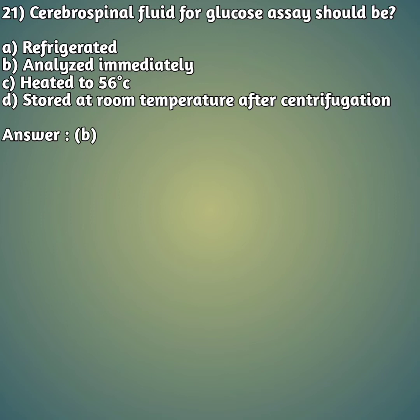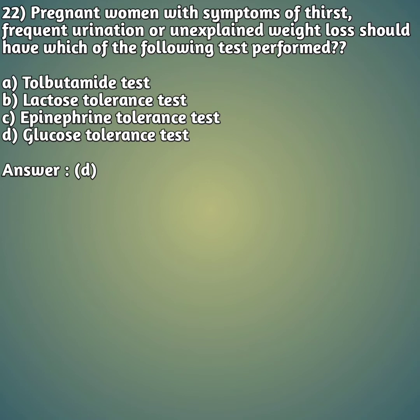Question 21: Cerebrospinal fluid for glucose should be — option A: refrigerated, option B: analyzed immediately, option C: heated to 56 degrees centigrade, option D: stored at room temperature before centrifugation. You should never refrigerate CSF. The right answer is option B, analyzed immediately.